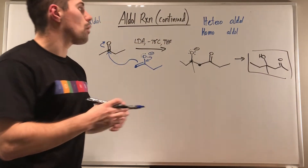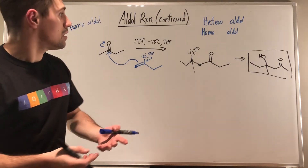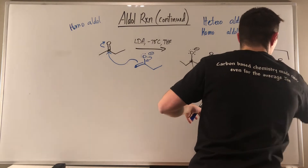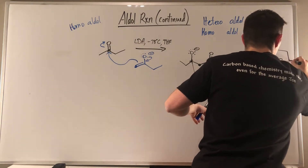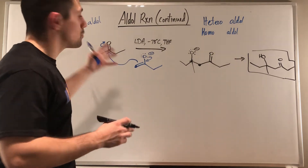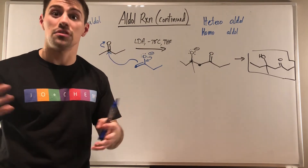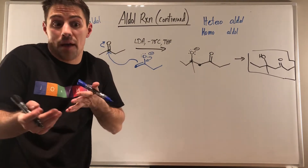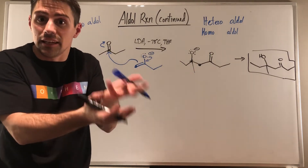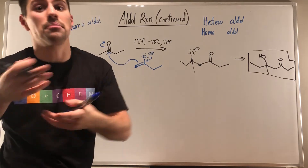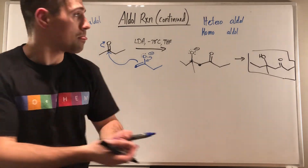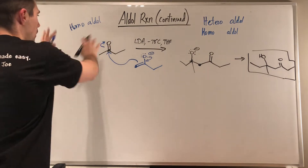Mainly why I wanted to include this video: when you're just given one thing, sometimes students freeze. They think, 'What do I do? I'm expecting two things — I'm supposed to make an enolate or an enol, and then I'm supposed to attack something.' But they can come from the same source. So this is a homoaldol situation.